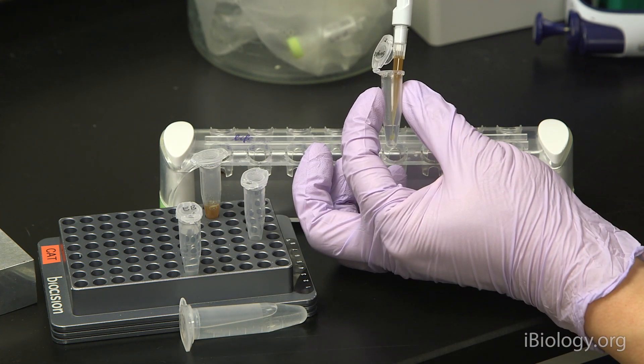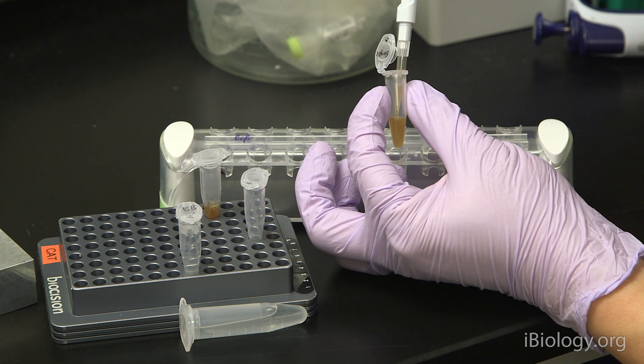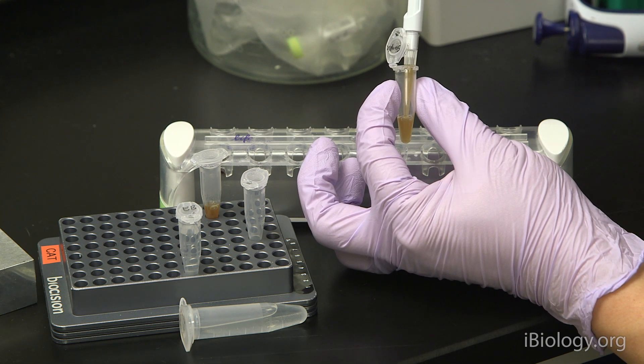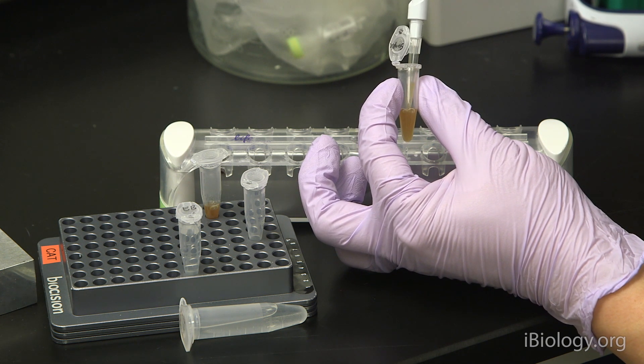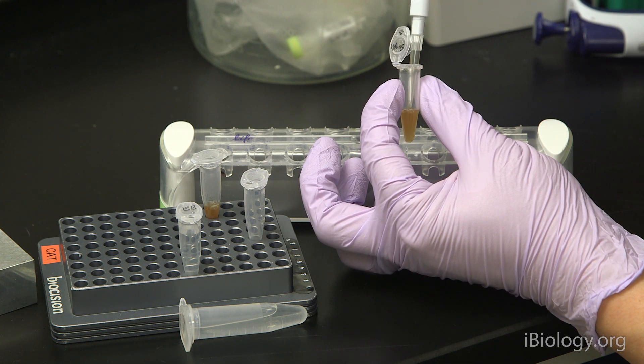When you add the mixture to your sample, you can mix by pipetting up and down, or you can vortex. You just want to make sure you get a nice homogenous suspension. And if you vortex, you'll want to give it a quick spin in a benchtop centrifuge just to collect all the fluids to the bottom of the tube.